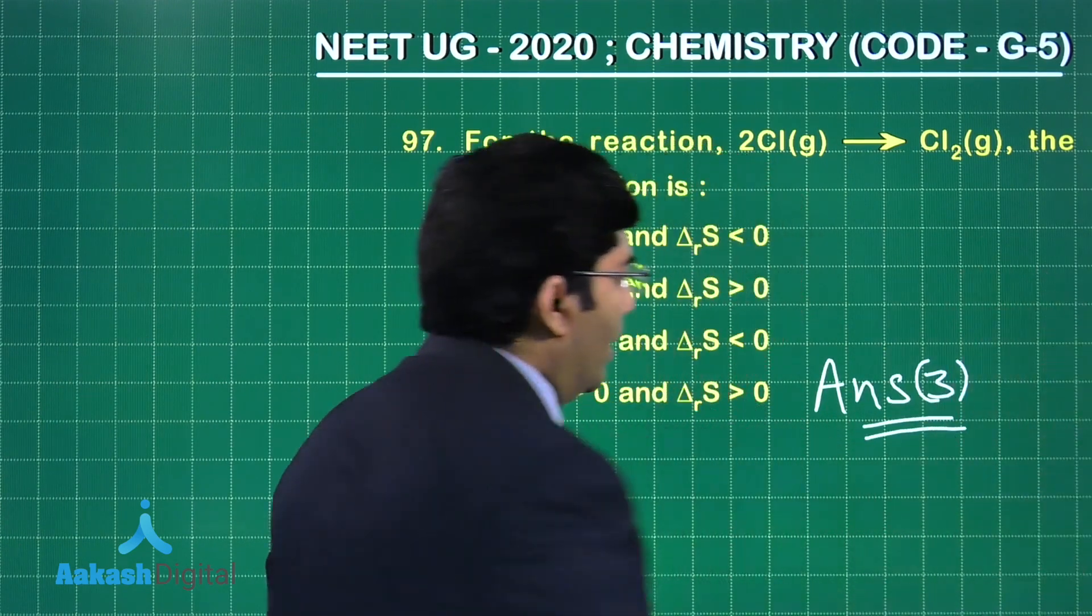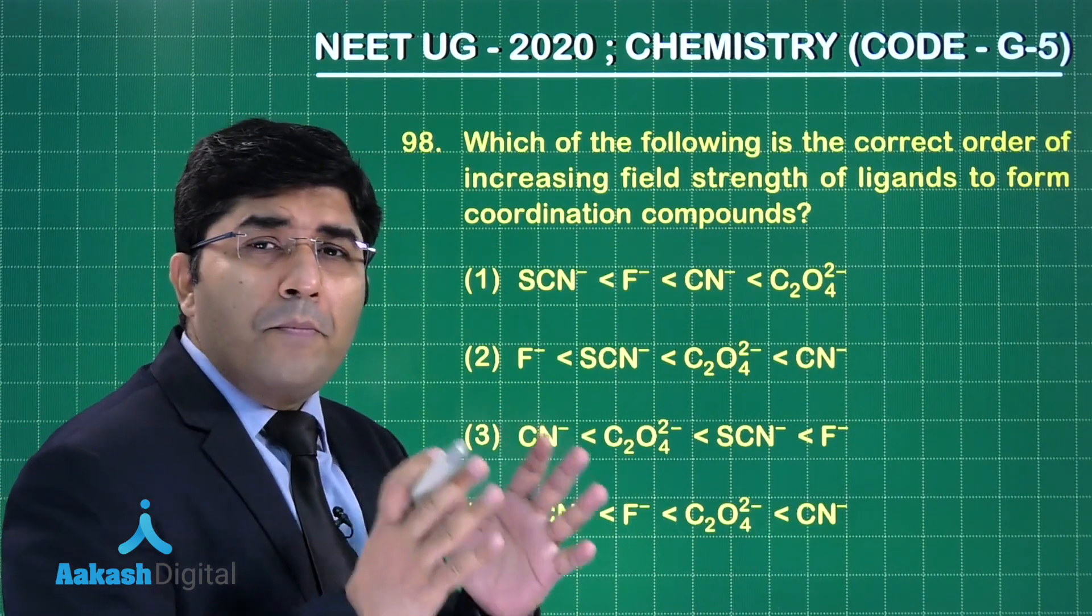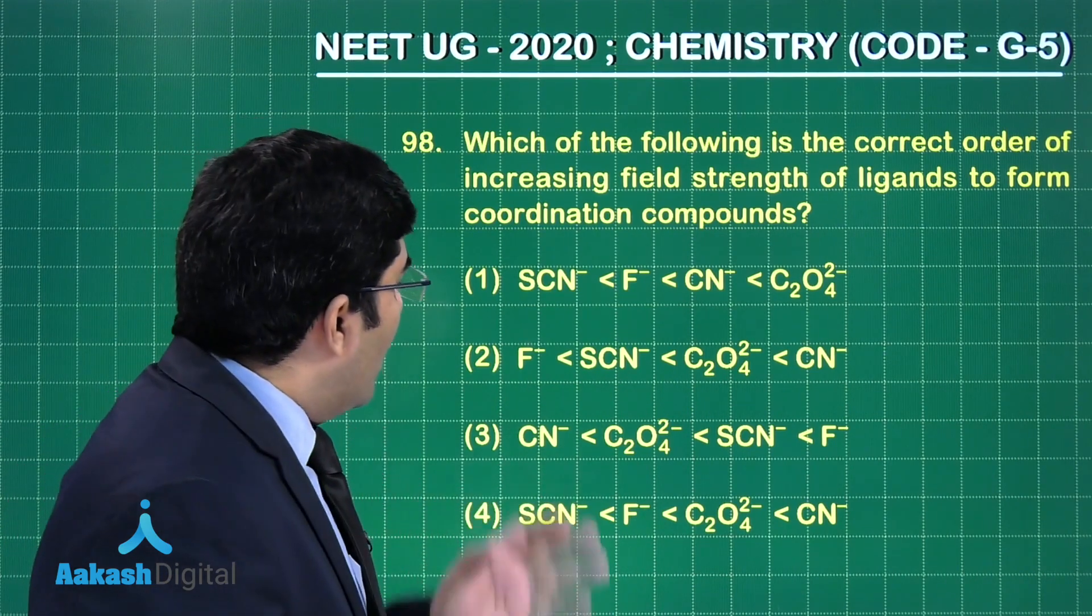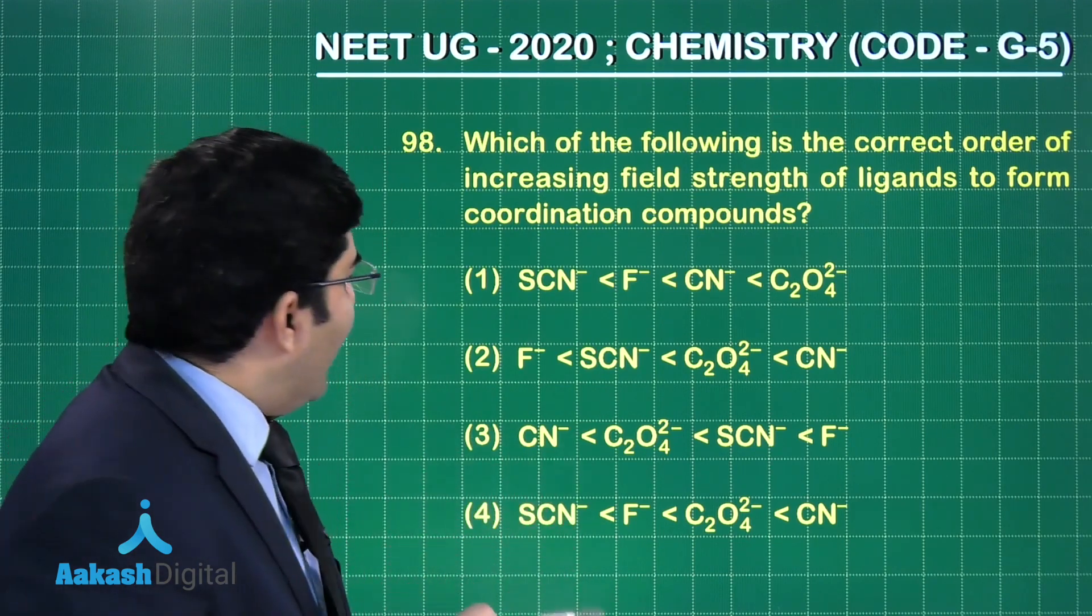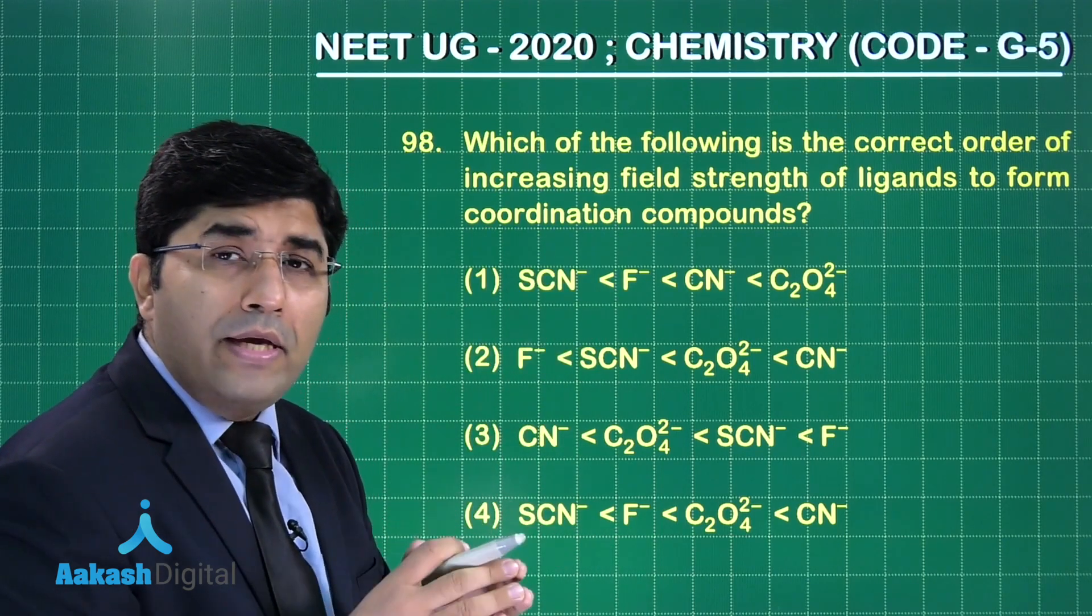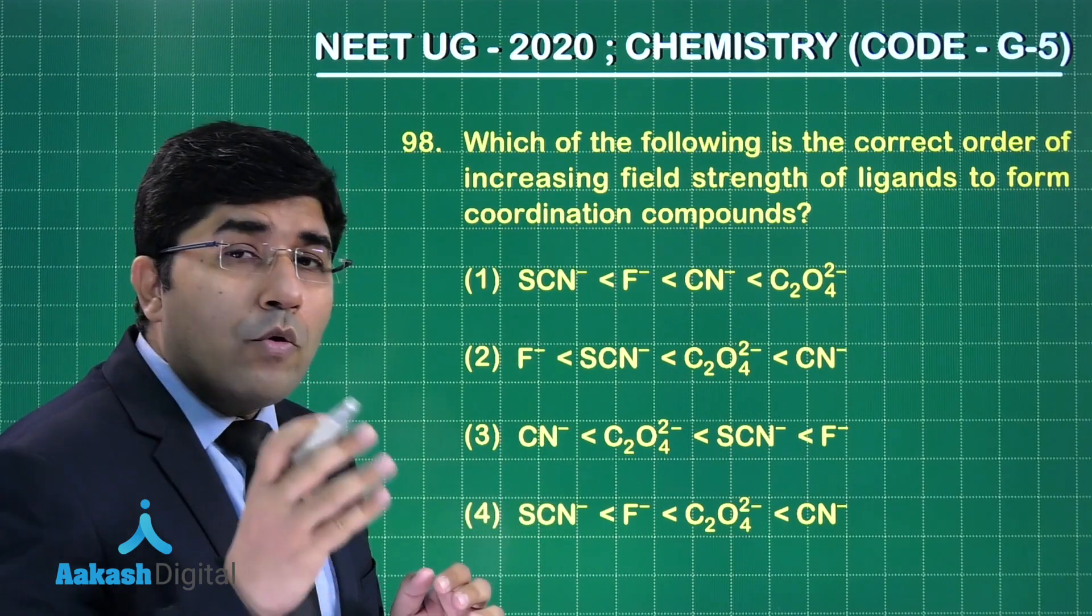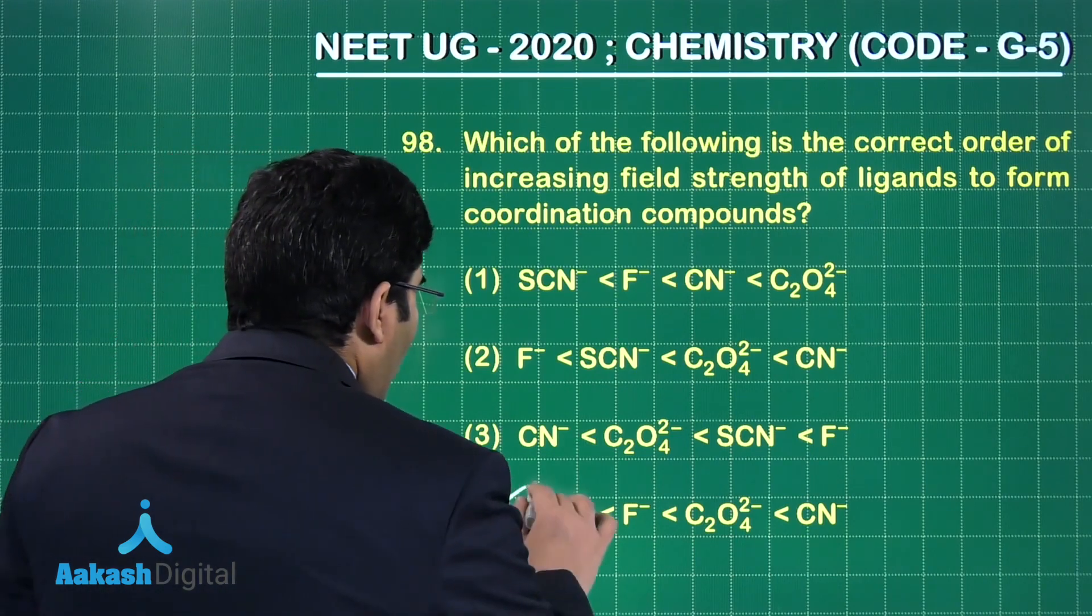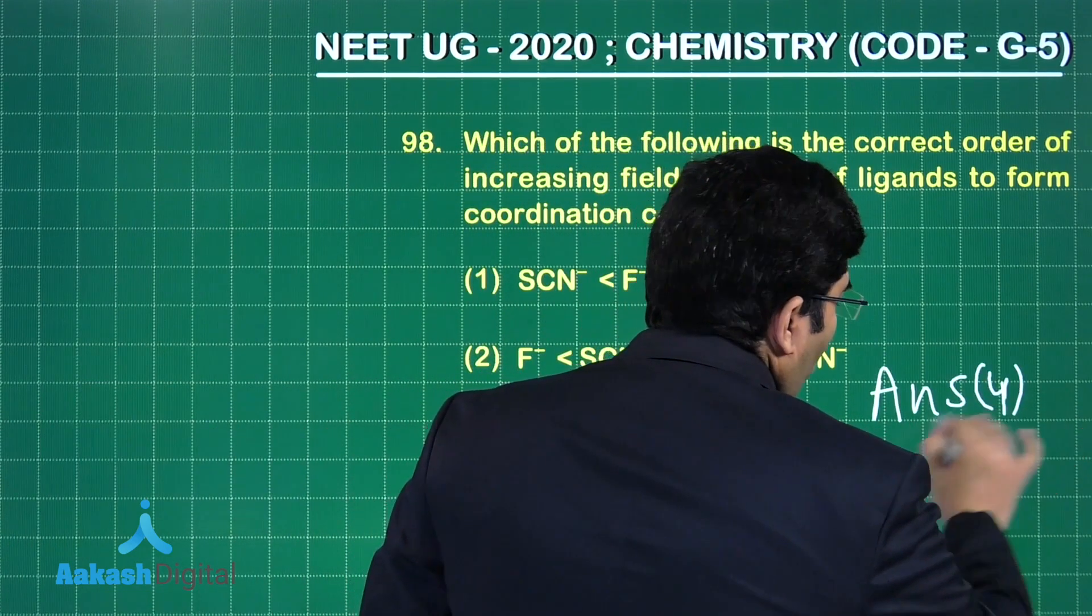Let's move on to the next question. Now this question is from coordination compounds and the strength of ligands is asked. We have different types of ligands like SCN⁻, F⁻, CN⁻, and C2O4²⁻, and we have to compare their strength. As per the spectrochemical series given in NCERT, the fourth answer is the correct answer, so the answer is option number four.